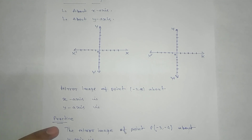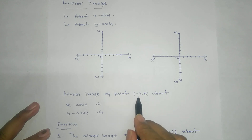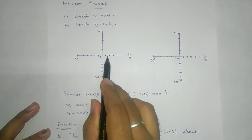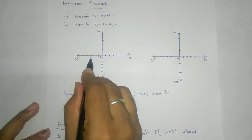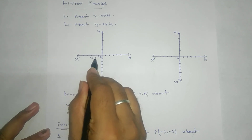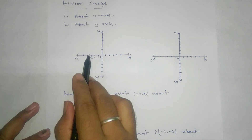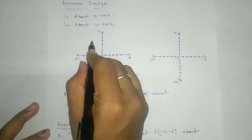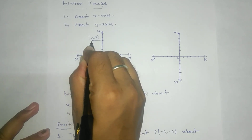Next topic is mirror image of a point about the x-axis and y-axis. Let's take the point (-3, 5) and plot it on the Cartesian plane. For the x-coordinate, go three units in the negative direction along the x-axis. For the y-coordinate, five is positive so go five steps upward. This gives us the point (-3, 5) on the plane.